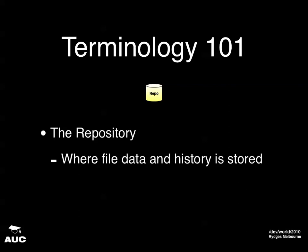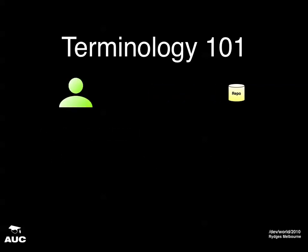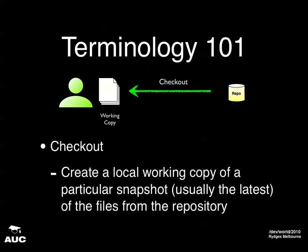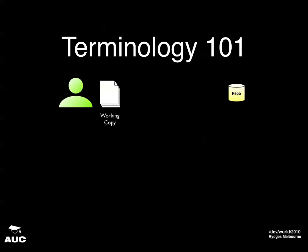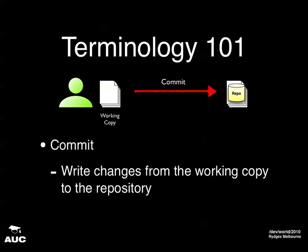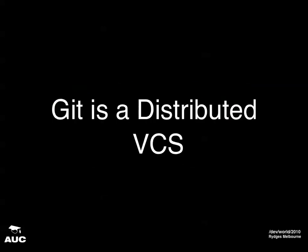The repository is the name given to the database where all your file data and your history is stored. Checkout is how you acquire copies of files from the repository. That goes to a working copy — a working copy of your code is what you check out of the repository. When you've finished your changes and want to send them back to the repository, that's called a commit or a check-in. Git is a distributed version control system — this is the big difference between Git and many other version control systems like CVS and Subversion.